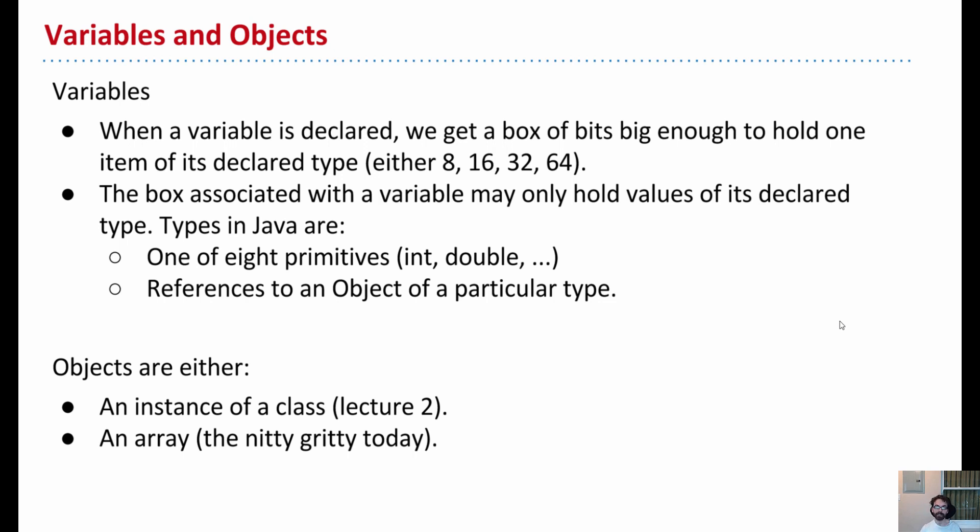So what's an object? An object is an instance of a class, right? So somewhere out there in memory, say we instantiate planet. Now there's a planet out there. And our variable will hold a reference to that object. This is just review right now.